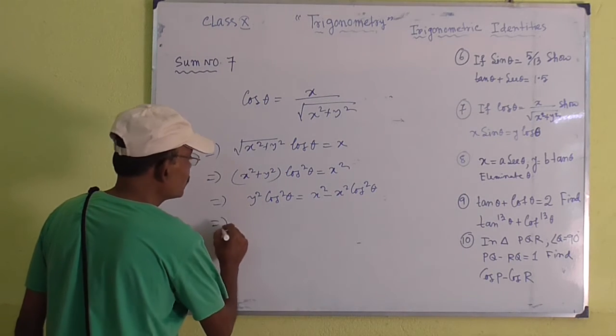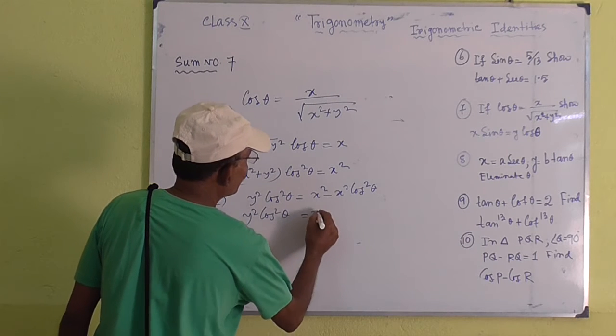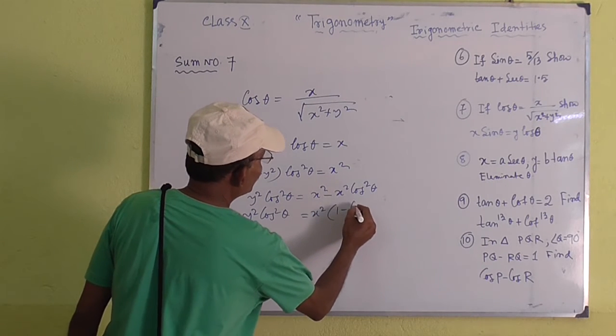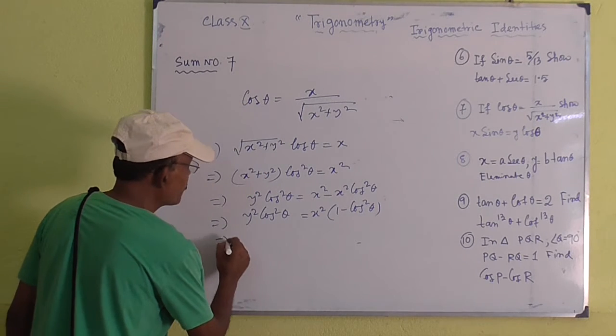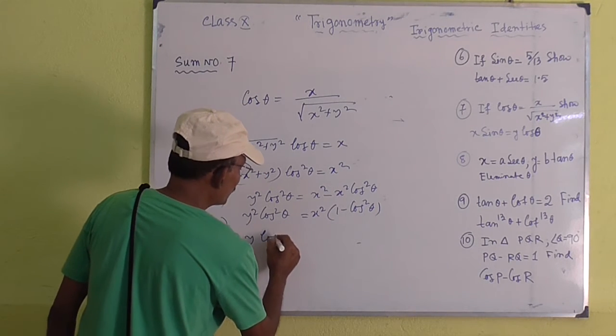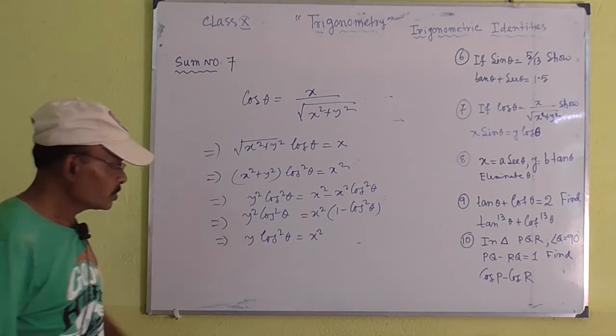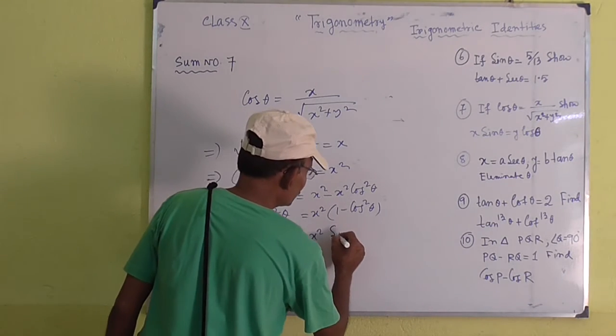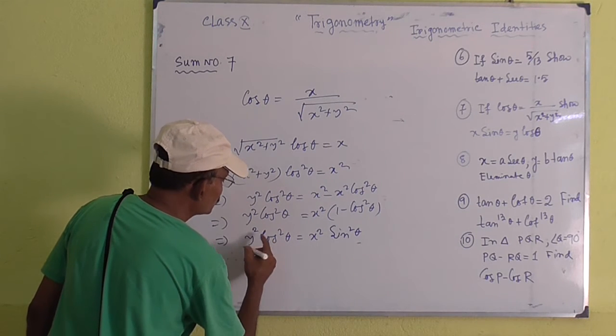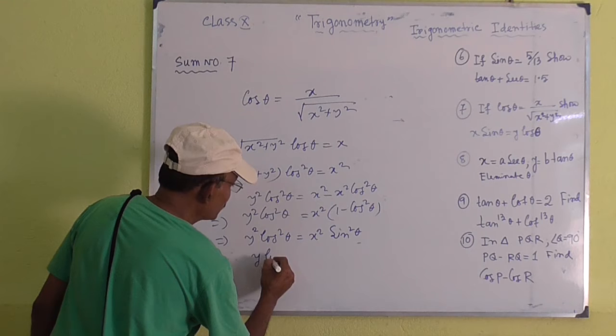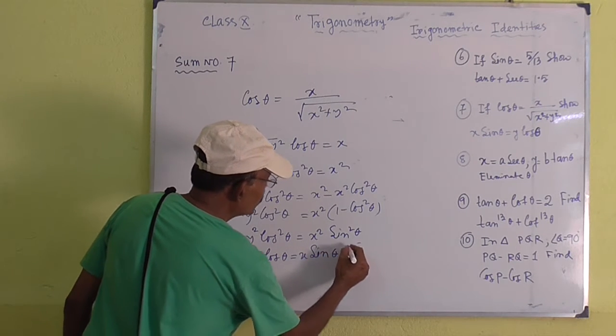Now take common from the right hand side, x square times 1 minus cos square theta. So y square cos square theta equals x square sin square theta, since 1 minus cos square theta equals sin square theta. Therefore, y cos theta equals x sin theta. Proved.